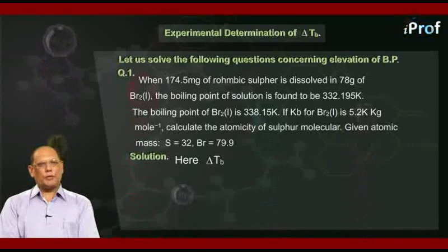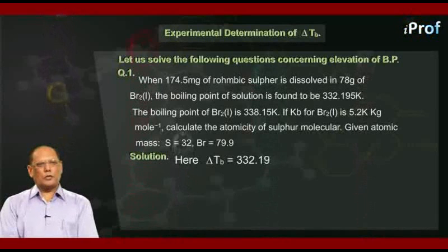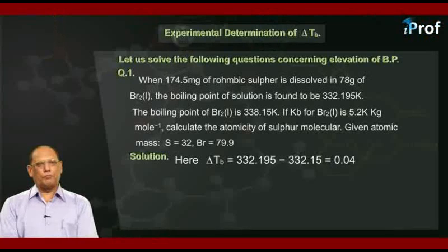Since delta Tb is 332.195 minus 332.15, that is equal to 0.045.